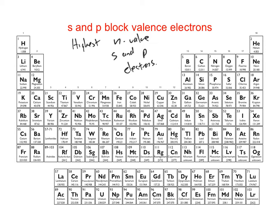Determining how many valence electrons there are is actually really easy. If the element is in the s or the p block, all you have to do is count what column it's in — only counting the s and p block columns. We wouldn't count the transition metals or the inner transition metals. So magnesium is in the second column, so it would have two valence electrons. Calcium is also in the second column, so also two valence electrons.